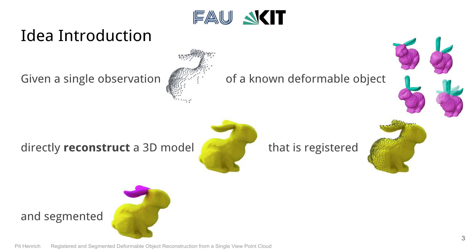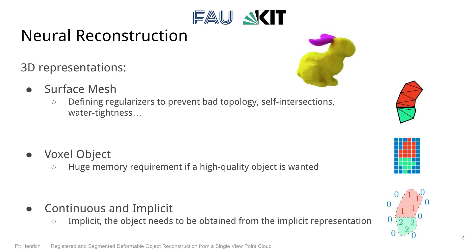The reconstruction representation is quite important. There is a lot of choice for different object representations. Two common output formats are surface meshes and voxel objects. Sadly, both come with significant challenges. When developing a system that outputs meshes, it is difficult to define regularizers that ensure good topology without self-intersections or holes. Although voxel-based models do not have this problem, they come with a problematic trade-off between resolution and memory requirements.